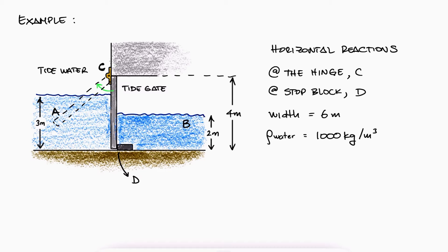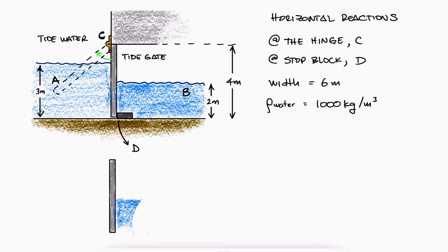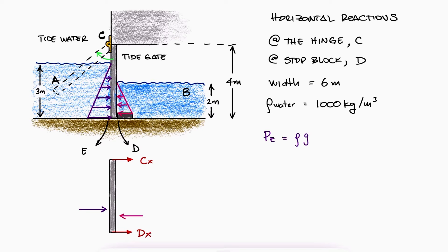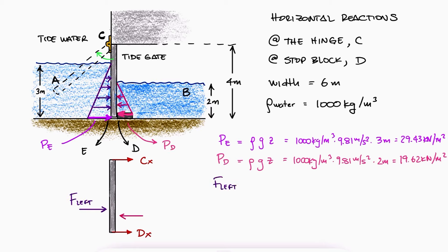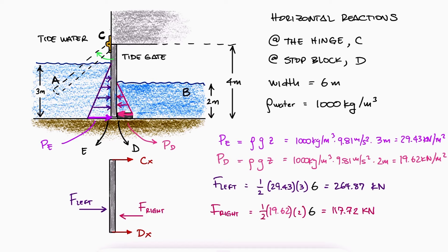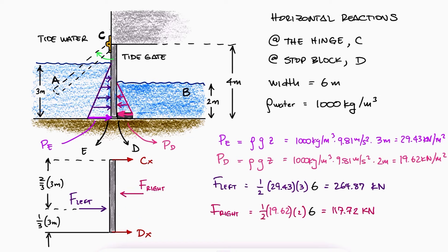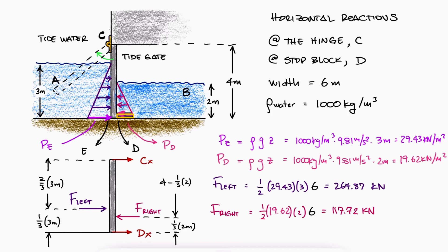Remember to try to solve this problem on your own before watching the solution. A free body diagram of the tide gate shows the reactions at C and D, plus the two hydrostatic pressure forces. The maximum hydrostatic pressure on the left — call it E — equals rho g z with depth z equal to 3 meters. The hydrostatic pressure at point D corresponds to a depth of 2 meters. The force from the left equals the area of the purple triangle times the gate width; the force from the right equals the area of the pink rectangle times the gate width. The purple force is located at one third of the height from the bottom; the pink force is also at one third of the 2-meter height from the bottom, assuming the height of block D is negligible.